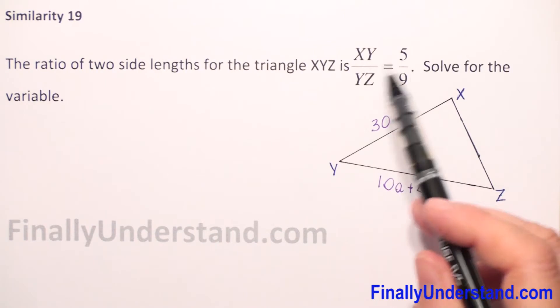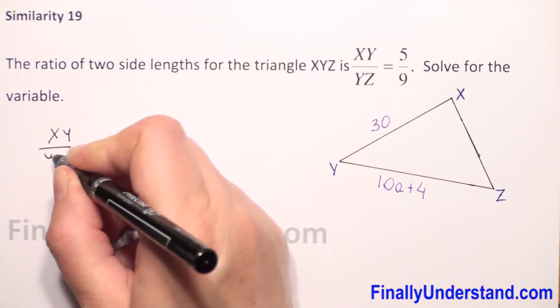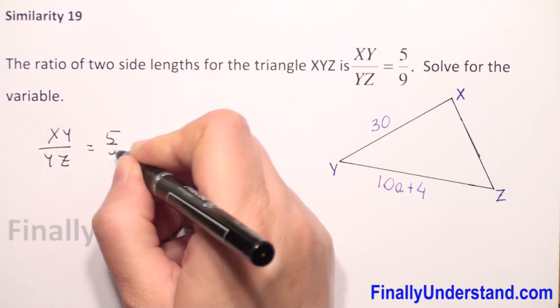So let's set up our proportion. We have that XY to YZ is 5 to 9.